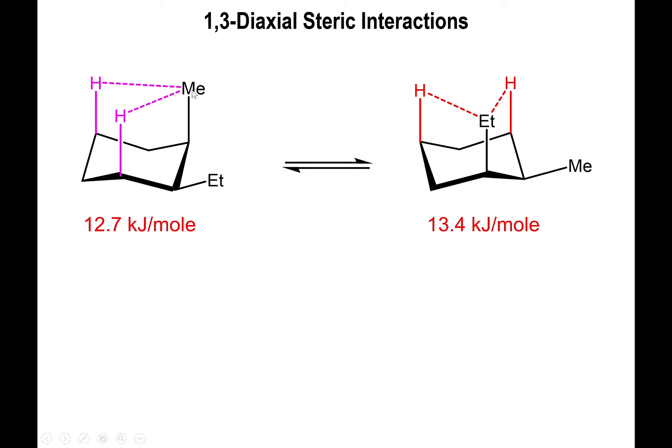But what we have right here is methyl next to one of the hydrogens in the axial position. And then we have also that same methyl next to the opposite hydrogen in an axial position. And the same picture is shown right here. You have an ethyl group next to two axial hydrogens. If you were to count the carbon that bears the axial R-group as carbon one, then the axial hydrogens are exactly two carbons away or on carbons three. So this is why this is called the 1,3-diaxial interaction.